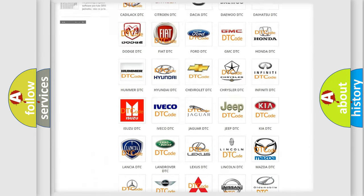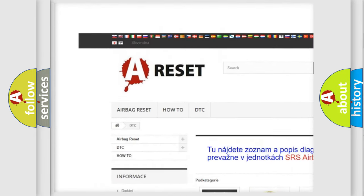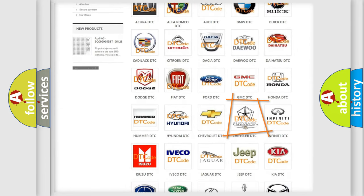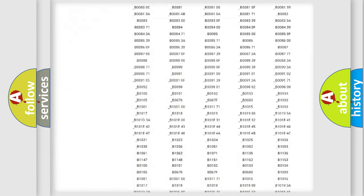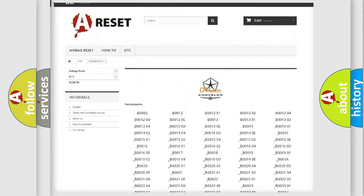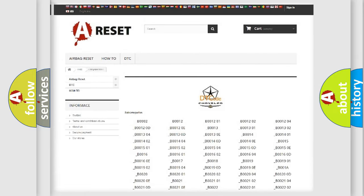Our website airbagreset.sk produces useful videos for you. You do not have to go through the OBD2 protocol anymore to know how to troubleshoot any car breakdown. You will find all the diagnostic codes that can be diagnosed in Chrysler vehicles, and also many other useful things.